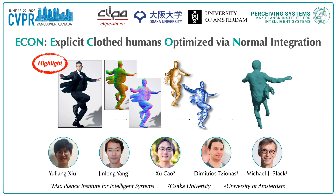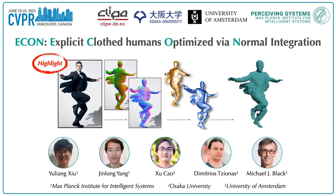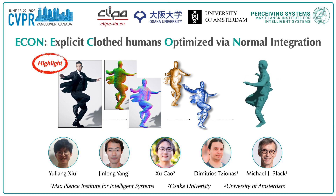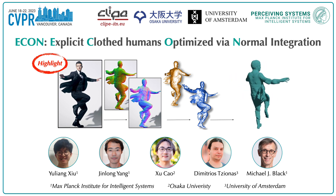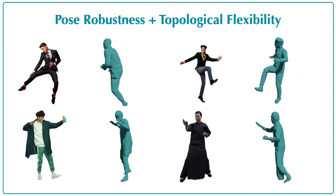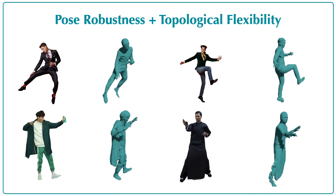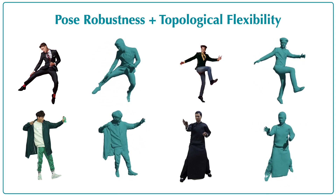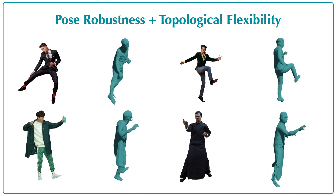We present ECON, which stands for Explicit Clothed Humans Optimized Via Normal Integration. ECON reconstructs high-fidelity, detailed 3D humans, even those wearing loose clothing or in challenging postures, from a single image. It combines the best properties of implicit and explicit representations, thus effectively addressing the long-standing trade-offs between pose robustness and topological flexibility.